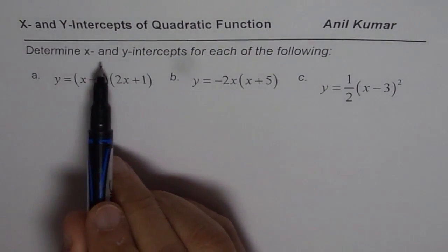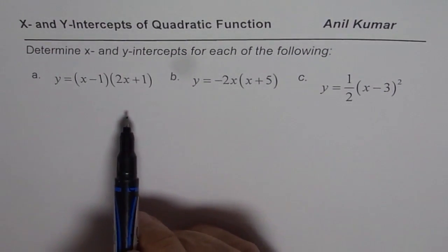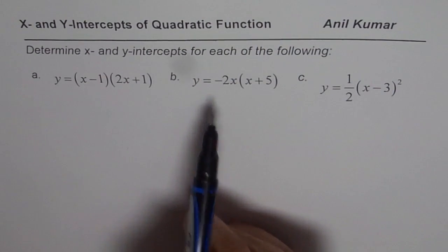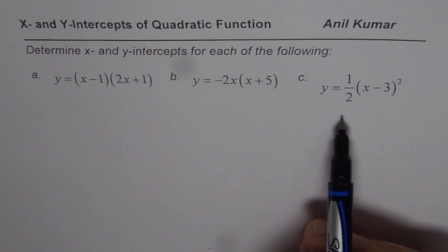Question is, determine x and y-intercepts for each of the following. So here we have quadratic equations in factored form. This one you can also say factored form and vertex form.